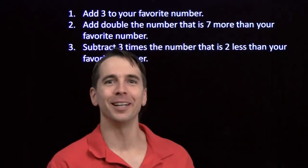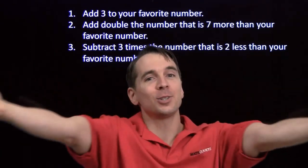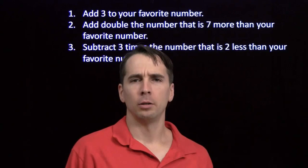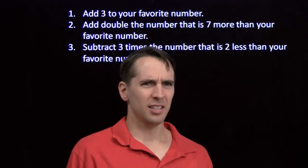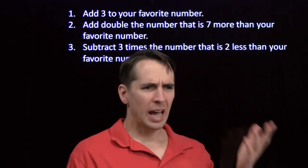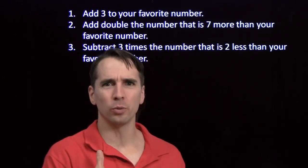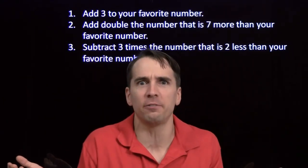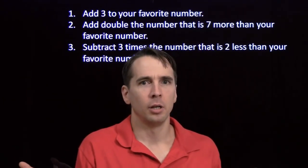All right, good, good, good. So you got 23 now, and I got 23. That means you finally chose the right favorite number. What's your favorite number? What? That's not my favorite number. I don't even like that number. You got 23 and I got 23, and we both went through these same three steps, but we started with different favorite numbers. How could that be?